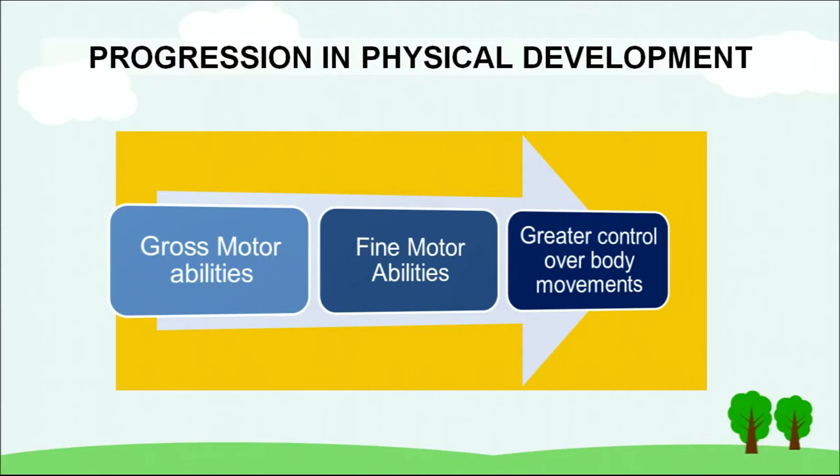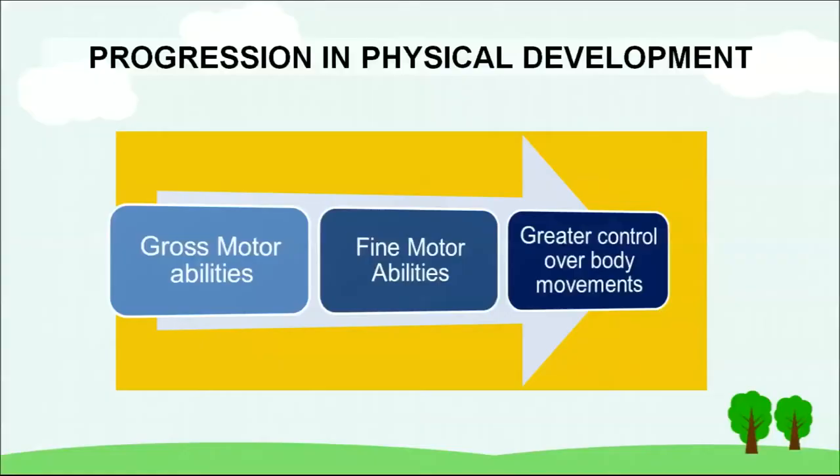Beginning with the age bracket of 3 to 6 years: muscular and skeletal growth progresses and children become physically strong. The first thing they develop in their physical abilities is gross motor skills — through activities such as running, jumping, throwing, and kicking. They are now able to catch a bounced ball and paddle a tricycle. Alongside gross motor skills, fine motor skills are also being polished. They can draw geometrical figures like circles and squares, use blunt-tip scissors meant for children, dress themselves without supervision, and manage a spoon and fork neatly while eating. As shown in the flowchart, gross motor abilities develop first, then fine motor abilities follow.